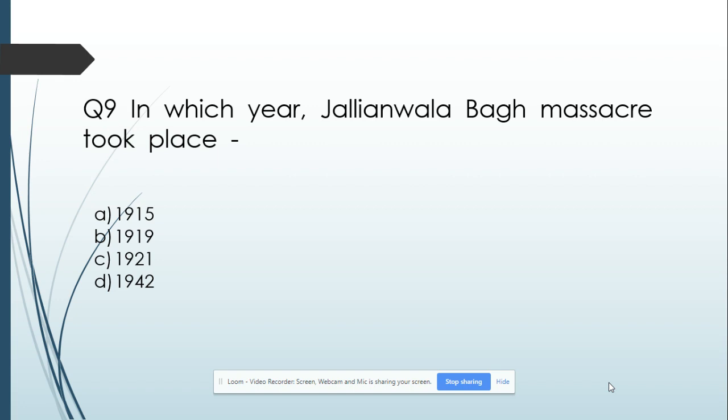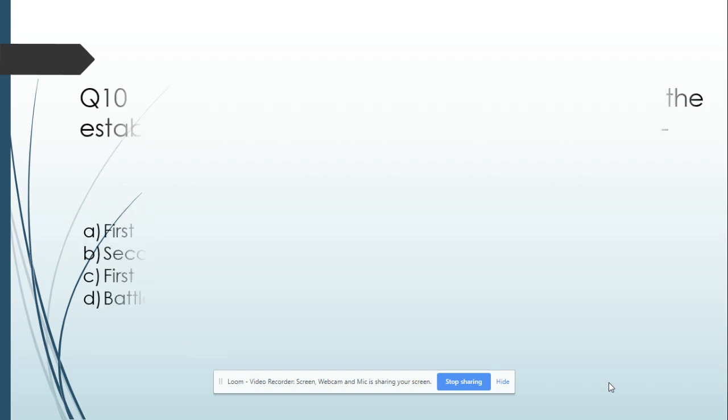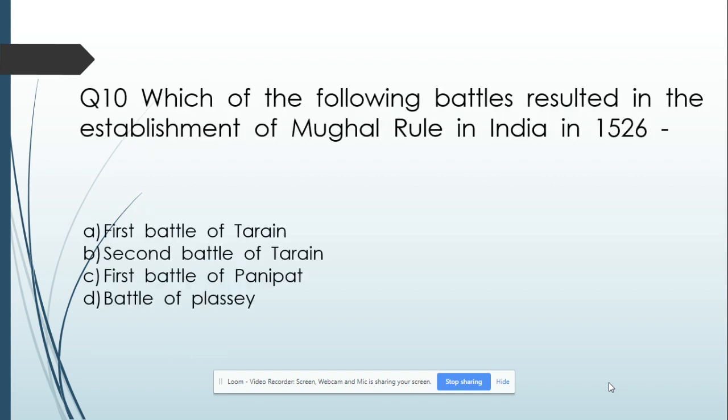Question number 9: In which year did the Jallianwala Bagh massacre take place? Option A: 1915. Option B: 1919. Option C: 1921. Option D: 1942. And its answer is 1919.